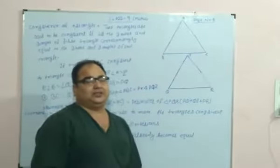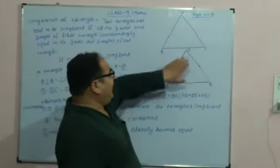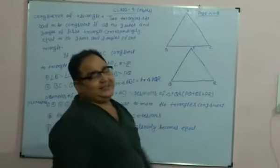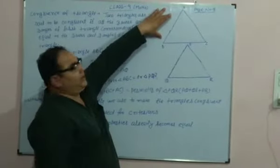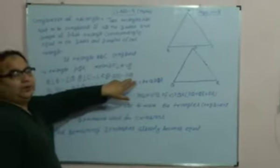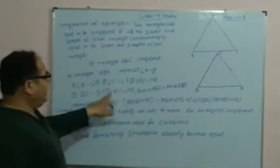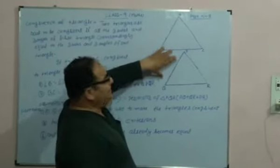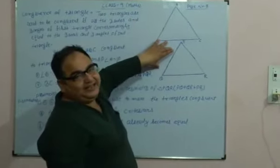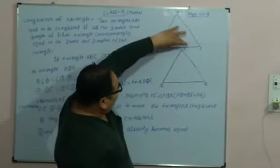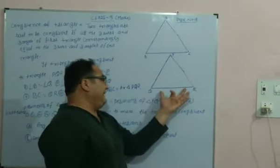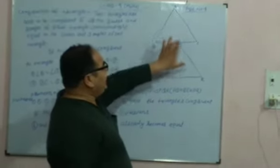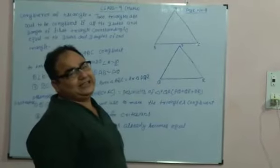Any two equal figures are said to be congruent. Triangles ABC and PQR are equal, that is why they are congruent. Equal means: AB equals PQ, BC equals QR, AC equals PR. So the first side of the first figure equals the first side of the second figure. Base BC of the first figure equals base QR of the second figure, and third side AC equals PR — then these two triangles are said to be congruent.